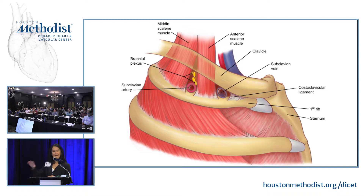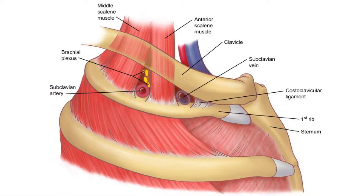This lateral view is what you would see with a transaxillary approach to removing the first rib. The relationship to remember: the vein is anterior to the anterior scalene, the artery is posterior to it, and the brachial plexus is lateral to the artery and a little higher as it comes down above the first rib.